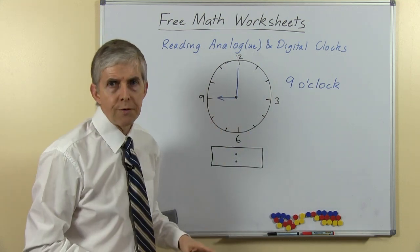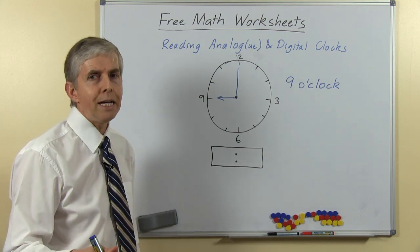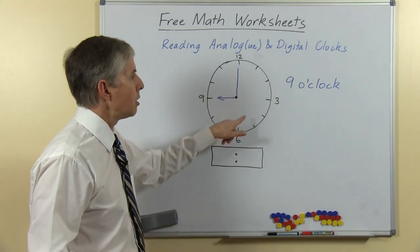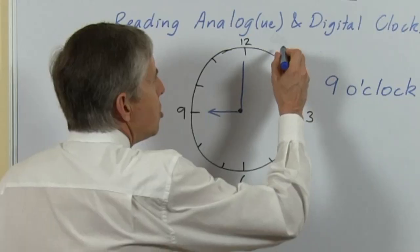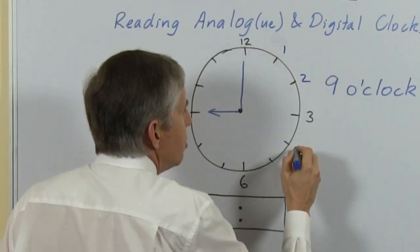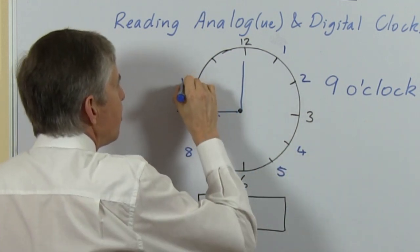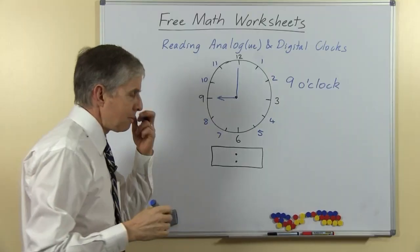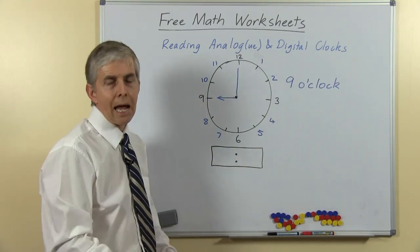Now I've left some of the numbers off the clock. I think it's a good idea for you to learn to read the time even if all the numbers aren't there because some clocks don't have the numbers. But you'll know that this is one and two, four and five and so on. So I'll just fill those in so we get up to the 11. So the short hand shows us how many hours.